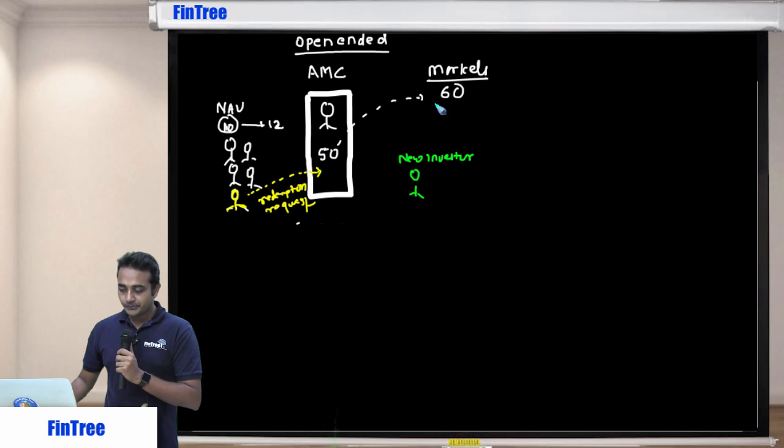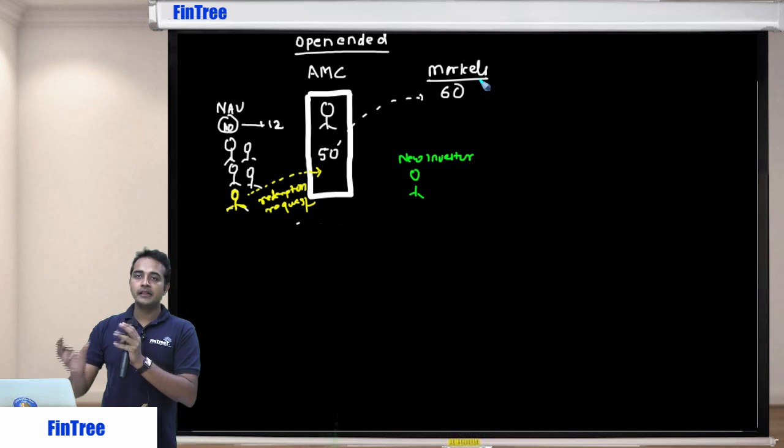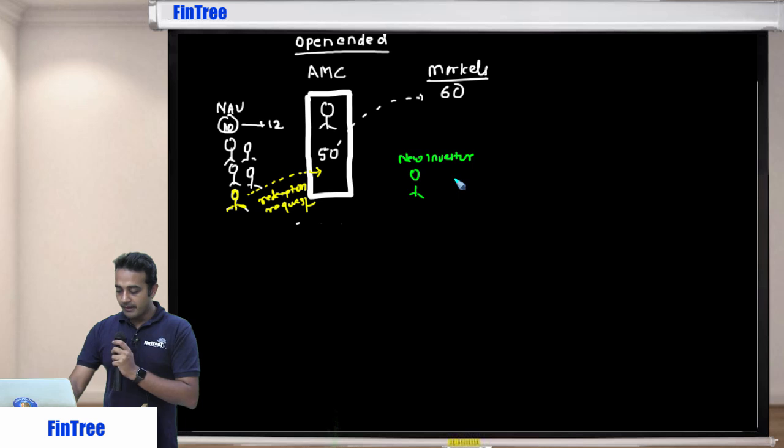What the fund manager will do is out of his portfolio of 60, he will sell securities in proportion worth 12. He will sell securities worth 12, take that cash, and give that to you.